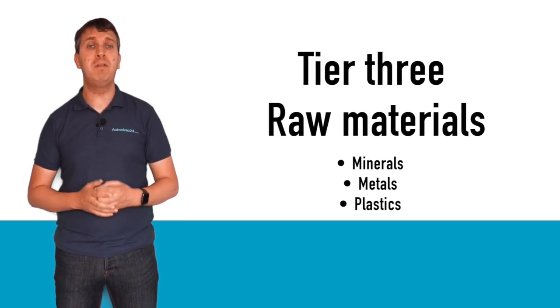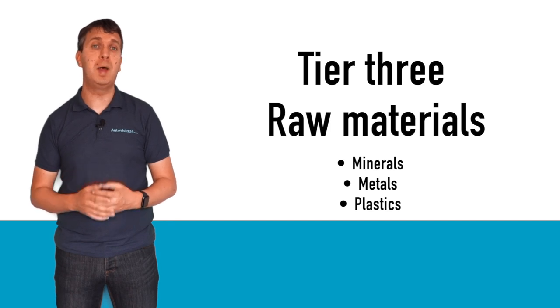There are different tiers of suppliers depending on their position in the supply chain and their status. Tier 3 suppliers are those who deal with raw materials such as minerals, metals and plastics.